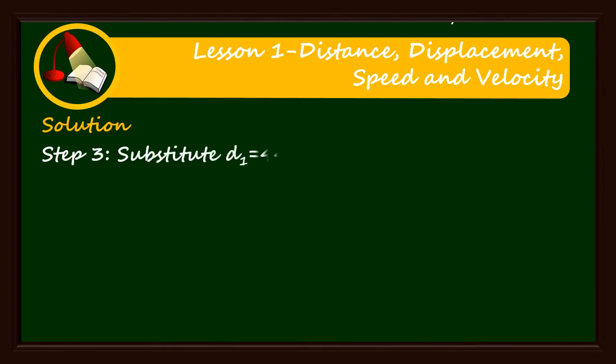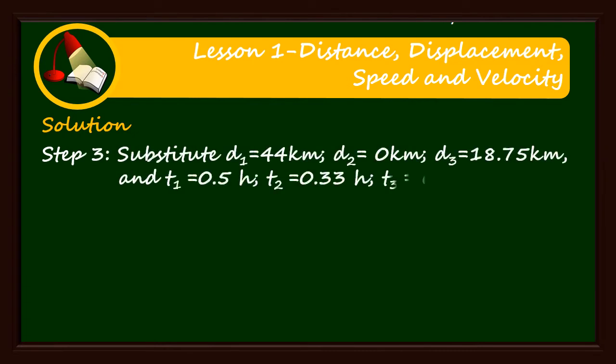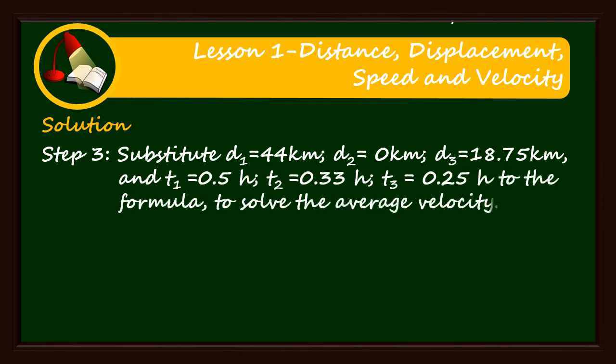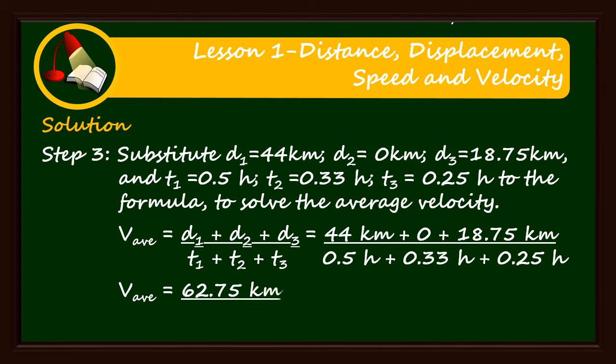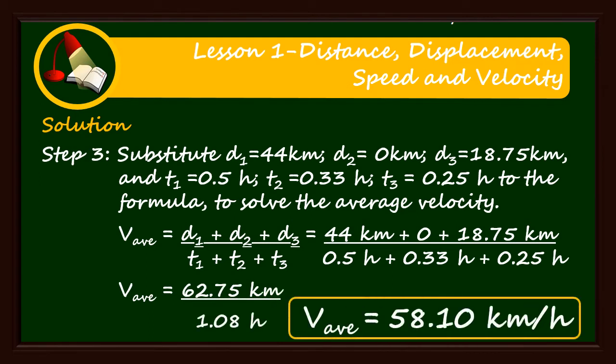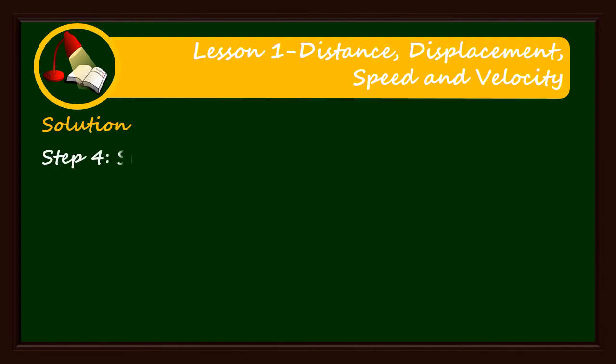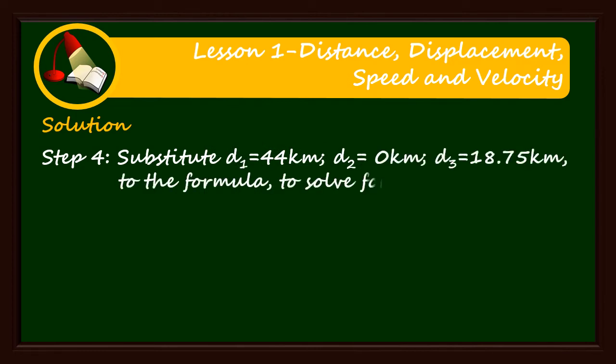Step 3: Substitute D sub 1, D sub 2, and D sub 3, and also T sub 1, T sub 2, and T sub 3 to the formula, and solve for the average velocity. Step 4: Substitute D sub 1, D sub 2, and D sub 3 to the formula, and solve the displacement for the total trip.